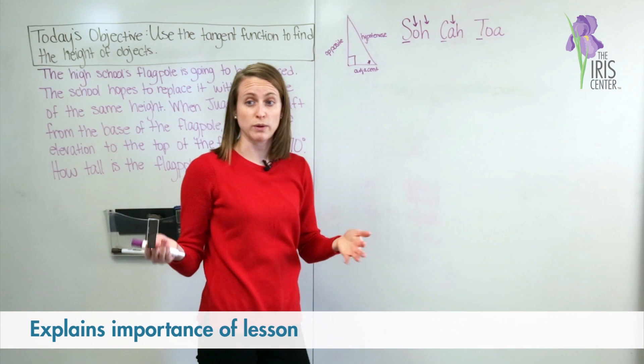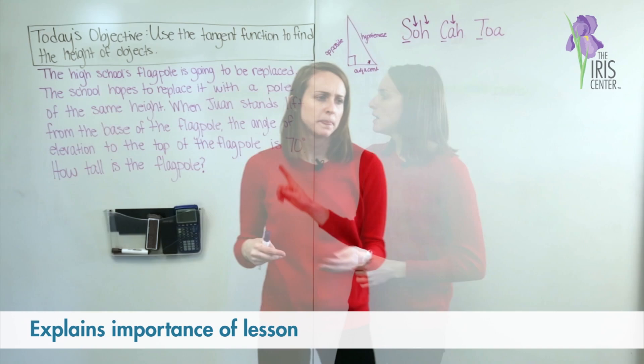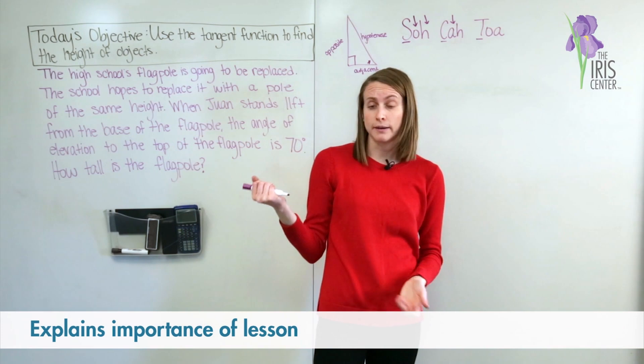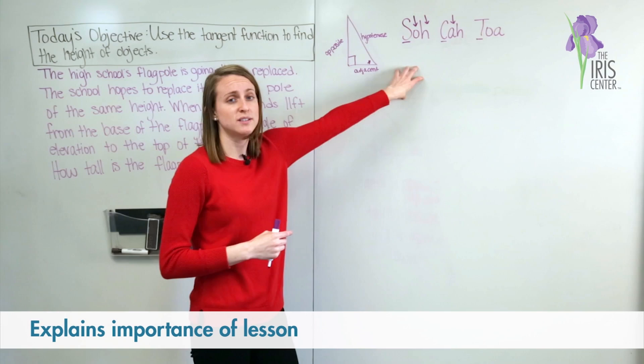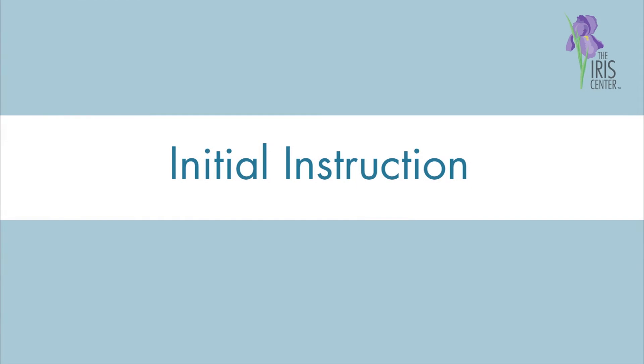So using this knowledge and thinking about SOH-CAH-TOA to help us remember what those ratios are, we are going to solve a problem and figure out the height of a flagpole. You wouldn't normally be able to climb a flagpole or have a tape measure in your pocket to help you find the height, so you can use one of these functions to figure out what the height is without having to go climb it.